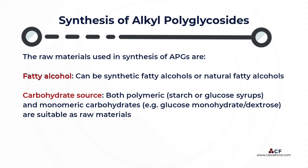Carbohydrate sources, both polymeric — starch or glucose syrups — and monomeric carbohydrates, for example glucose monohydrate or dextrose, are suitable as raw materials for the production of alkyl polyglucosides.